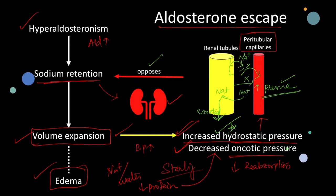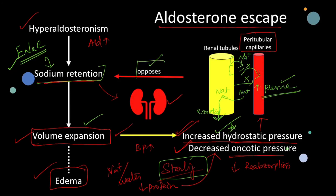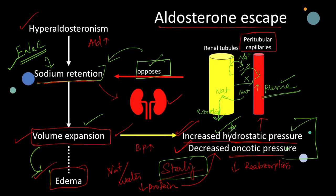High levels of aldosterone cause an increase in the number and activity of ENaC channels in the distal tubules, but the changes in the Starling forces increase the sodium delivery to the distal tubules, which overcomes the reabsorptive capacity of the distal tubules. So in primary hyperaldosteronism, the volume expansion is kept in check by a compensatory response by the kidney, which causes decreased reabsorption of sodium. Volume expansion beyond a certain level will only cause edema, and in primary hyperaldosteronism this expansion beyond that level is prevented, so there is no edema.